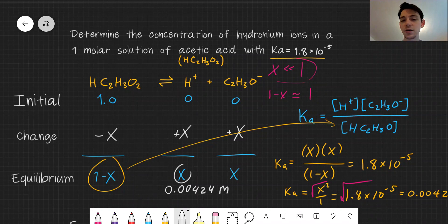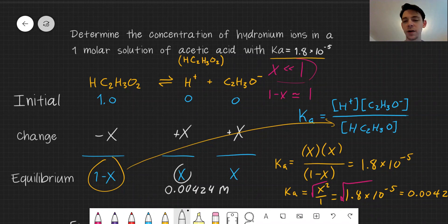Remember for strong acids, we just assume that all of the acid dissociates to form hydronium ions. Here, only a very small portion, less than 1% ended up, about half a percent ended up dissociating.